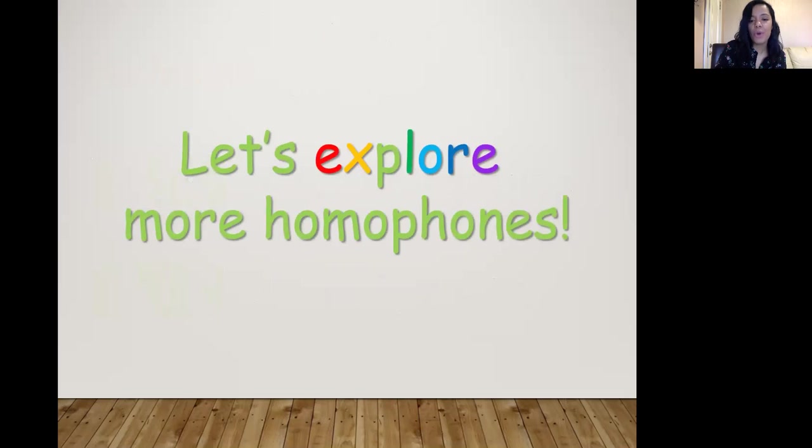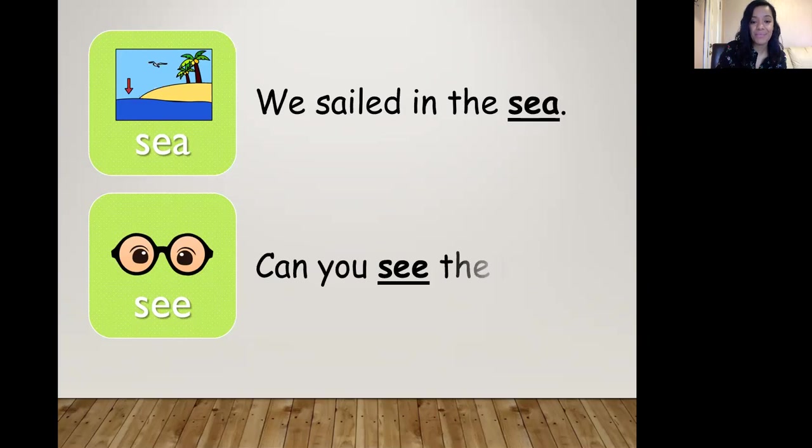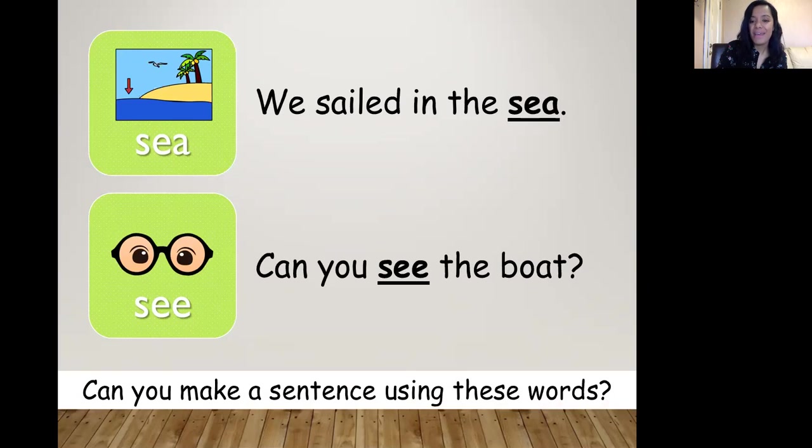So let's explore some more homophones. We have sea and see. Now one is a sea where you can go swimming in. The other one is the see, the verb, the action that your eyes do. We sailed in the sea. Can you see the boat? So try to keep practicing making sentences with these words. You can pause the video if you want and see if you can think of anything to make a sentence with sea and see.